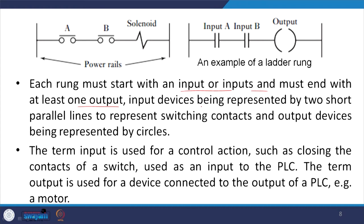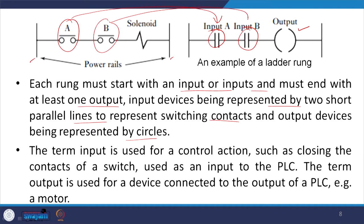Input devices are represented by two short parallel lines to represent a switching contact, and output devices are represented by a circle. Here we have two input devices, input A and input B, and the output device. For example, you have the power rails, a switch A corresponding to input device A, a switch corresponding to input device B, and the output could be activation of a solenoid.